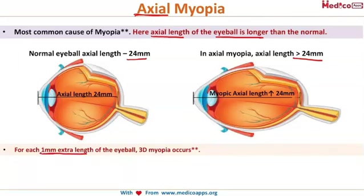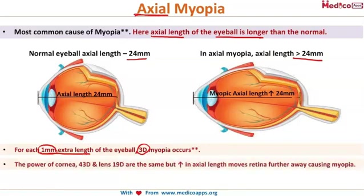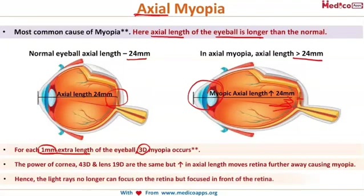An important number to remember: for each one millimeter of extra axial length, three diopters of myopia occurs. Such a small increase in the length of the eyeball causes about three diopters of myopia. The power of the cornea is 43 diopters and the lens is 19 diopters — this doesn't change, but the axial length is increasing, meaning the retina is moving farther away.